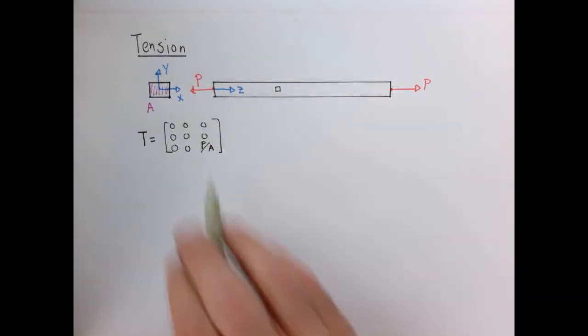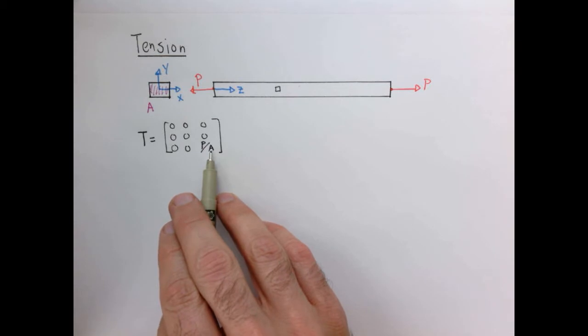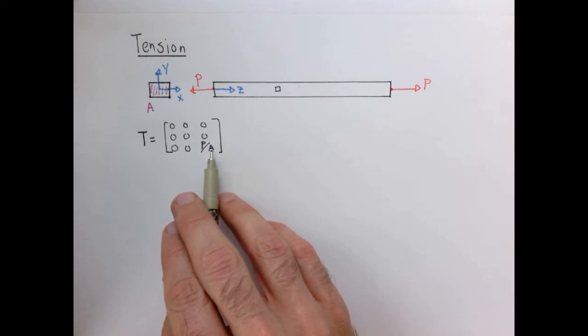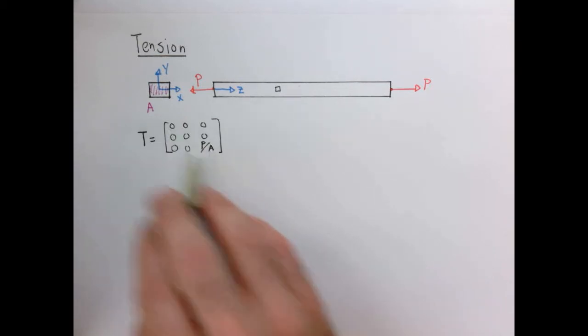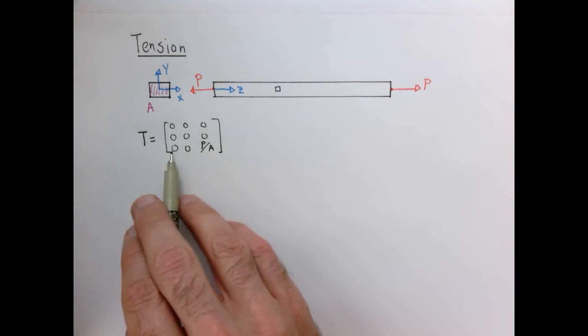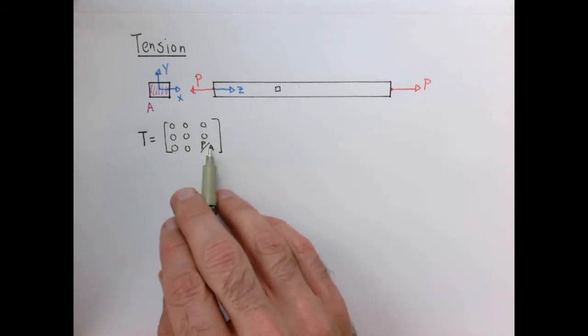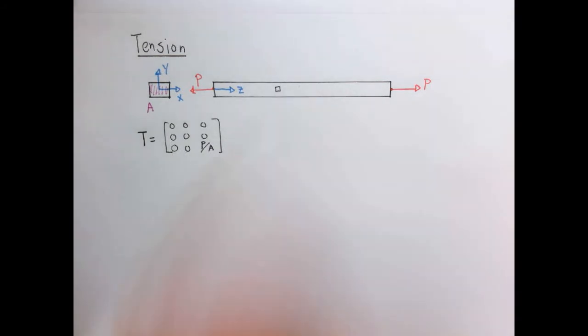So what we're going to hypothesize then is that our stress tensor is going to have the following form. In the x, y plane, there's basically no stresses, so everything is zero. And in the z-direction, there's only the normal stress which acts in the z, z-direction. So there's only a z-force in the z-direction.